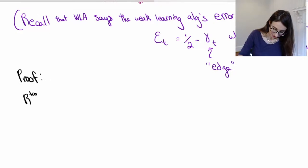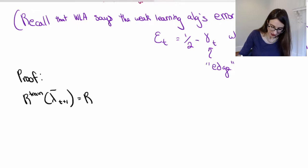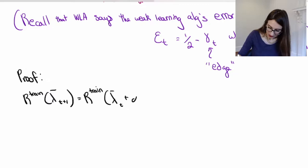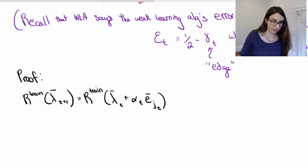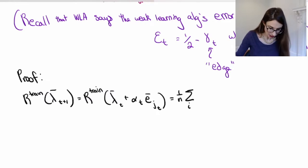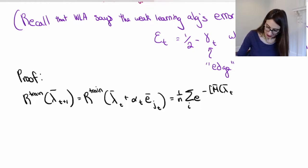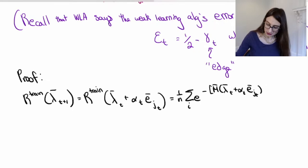So I have my exponential loss here. These are all vectors — I may not write them all with vector notation. This is from the recursion: AdaBoost adds α_t to weak classifier j_t at each step. So let's write down the exponential loss: (1/n) Σ_i e^{-m · λ_i}, but this is λ plus α_t e_{j_t}. I may omit the vector notation.